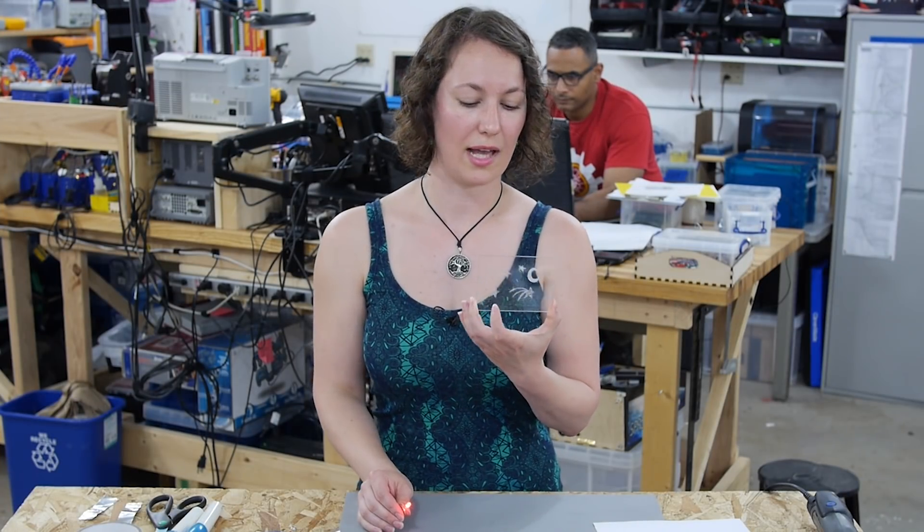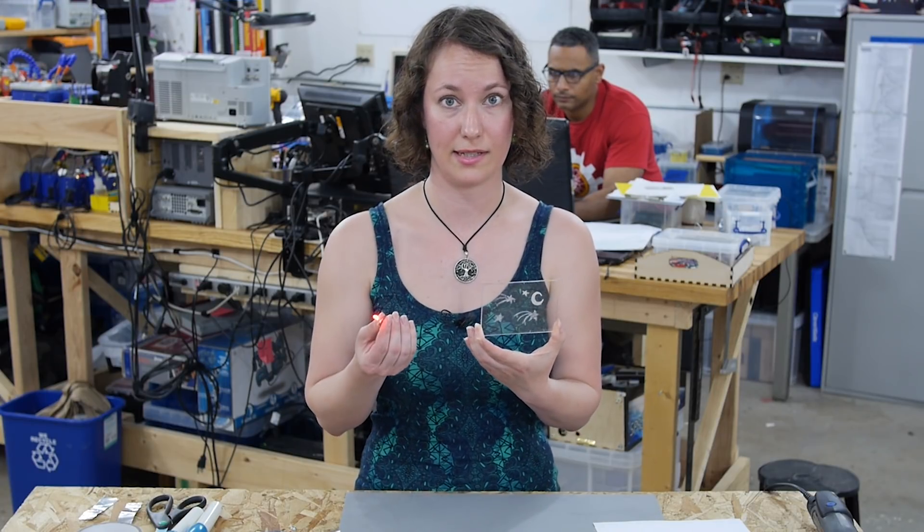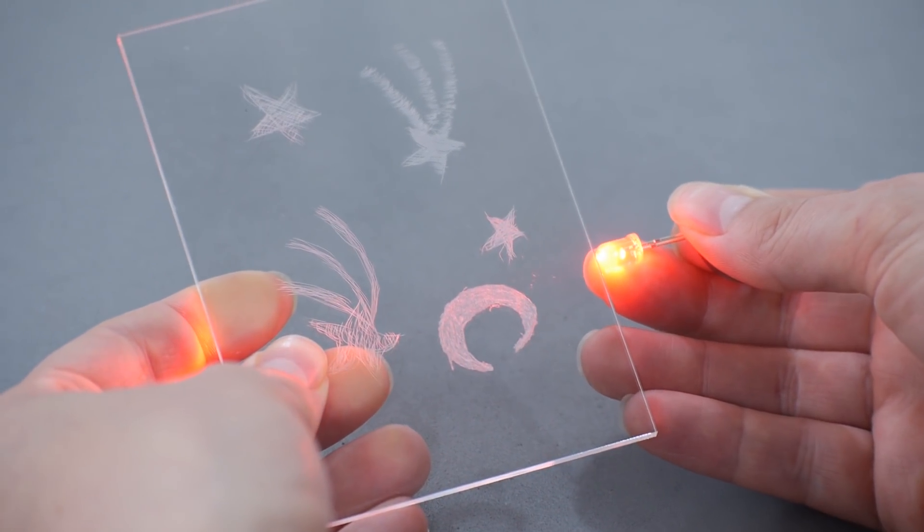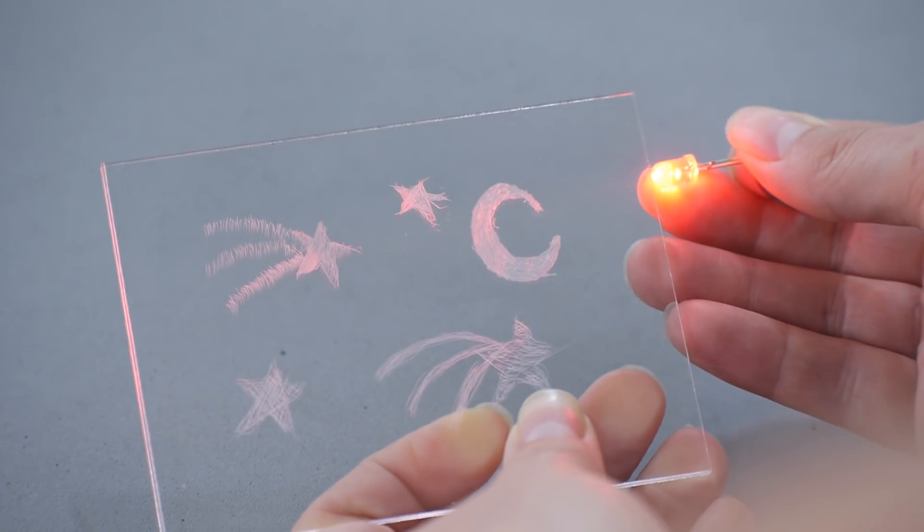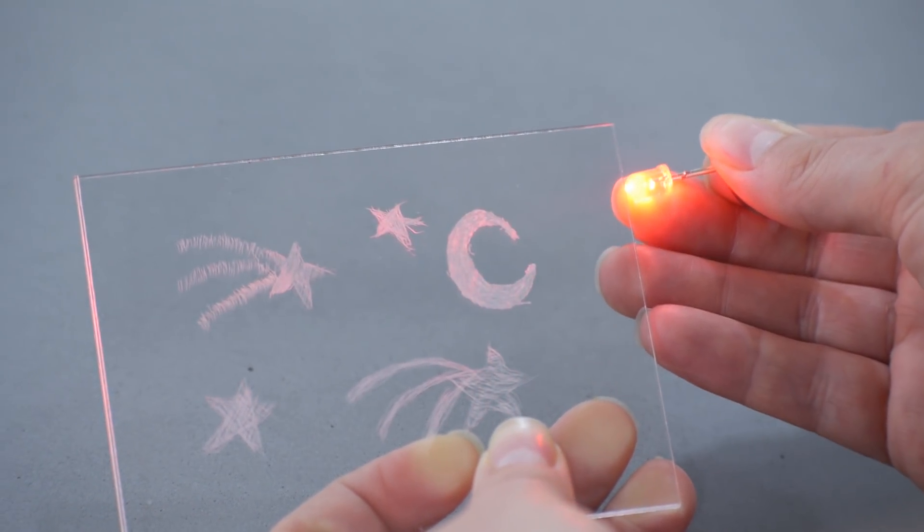For my example I etched in a few different techniques so I could show you the differences of direction of scratch and how it affects your design when you place your LED. For the moon I use the electric etcher so it has a nice even etch on it so there aren't really any sharp points. It's just all kind of glowing evenly.